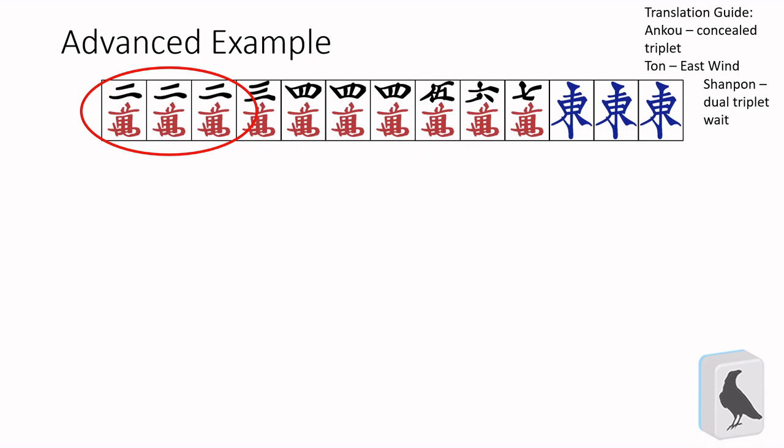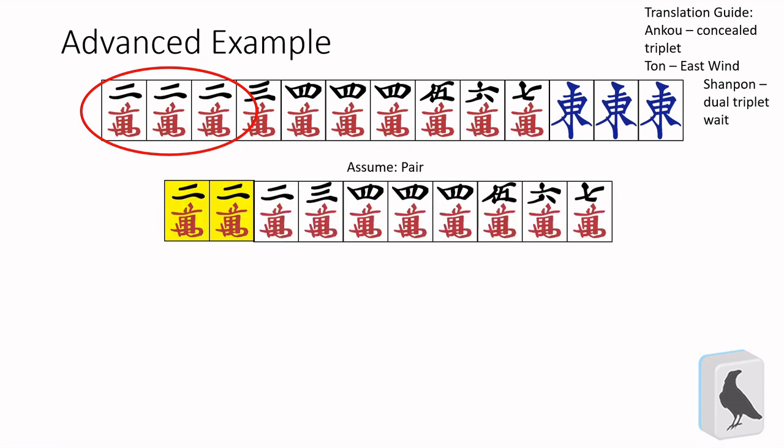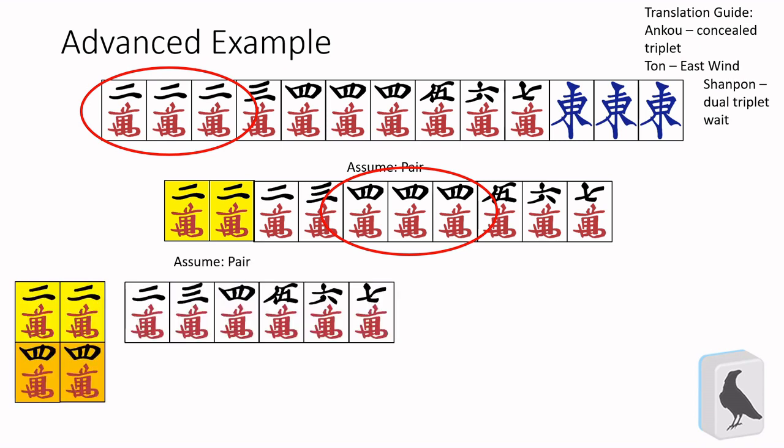So let's focus on the two-mon set first. Like before, we'll split it into isolating as a pair, and isolating as a triplet. Then, after that, we'll do the same for the onko of fours, and see what shapes it makes. When we assume both sets are pairs, the wait's pretty easy. Two pairs left in the hand means that you have to have a shanpon wait, waiting to complete the triplet with one of them. So we know that this shape is waiting on two-mon and four-mon.